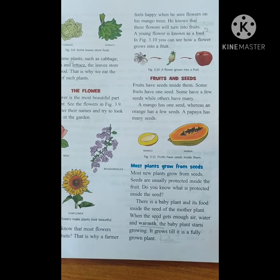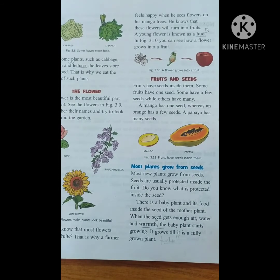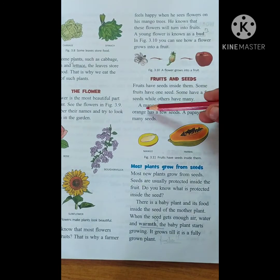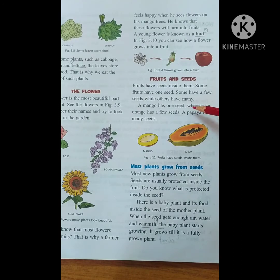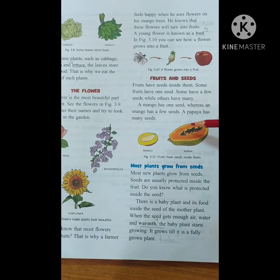Fruits like apple and papaya have very few seeds. Mango has only one seed. But guava has many seeds. There are different types of fruits with different numbers of seeds. A mango has only one seed, an orange has a few seeds, a papaya has many seeds, and grapes also have only a few seeds. Lemon also has very few seeds.